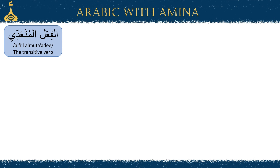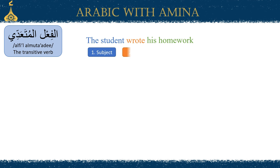Now let's talk a little bit more about al-fi'l al-muta'addi, or the transitive verb. It's the verb that requires a verb, subject, and object. For example, 'the student wrote his homework': the student is the subject, 'wrote' is the verb, and 'his homework' is the object. Constructing verbal sentences in English, we start with the subject first, the verb second, and the object third — this is the subject-verb-object word arrangement.